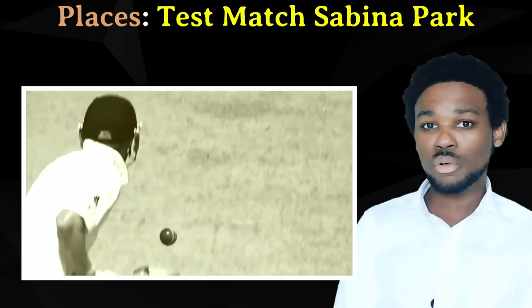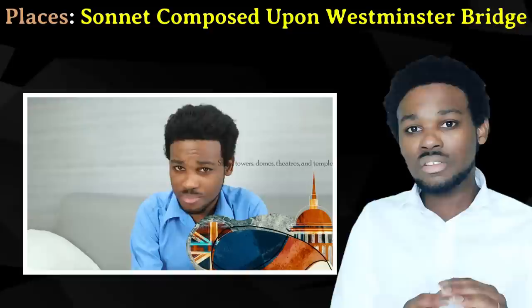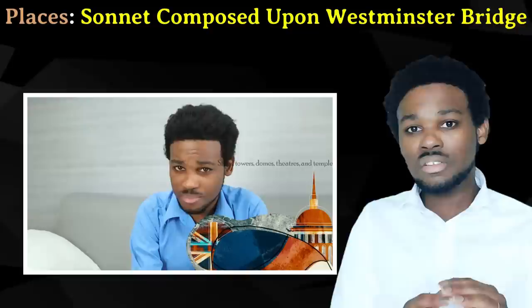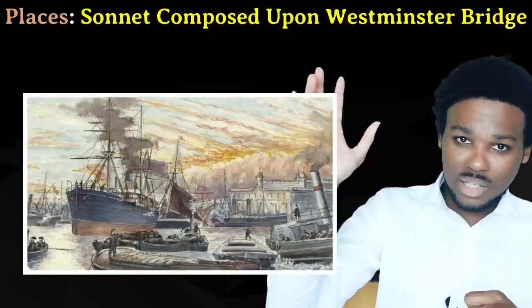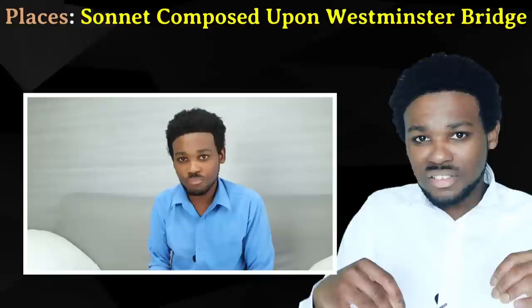Yet another poem that draws comparisons between the West Indies and elsewhere is Test Match Sabina Park. In this poem, an Englishman is a spectator at a cricket match that takes place at Sabina Park, which is in Kingston, Jamaica. Sabina Park represents the West Indies on a whole. In Sonnet Composed Upon Westminster Bridge, the speaker is in a specific place — London — which showcases a meeting point of nature and infrastructure, the God-made world and the man-made world. The poem also looks at several specific places within the city, like towers, theatres, and temples.